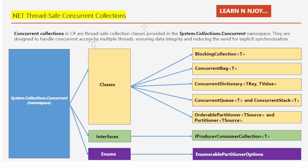.NET ThreadSafe Concurrent Collections in C# are thread-safe collection classes provided in the System.Collections.Concurrent namespace. They are designed to handle concurrent access by multiple threads, ensuring data integrity and reducing the need for explicit synchronization. In our last video, we focused on the IProducerConsumerCollection<T> interface, its key methods, and an overview of implementing classes like ConcurrentQueue, ConcurrentStack, and ConcurrentBag. If you haven't watched that video yet, I highly recommend you do. Today, our focus is on ConcurrentQueue<T> and ConcurrentStack<T> in detail with practical examples.